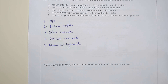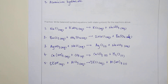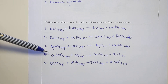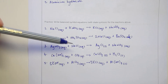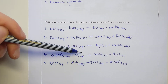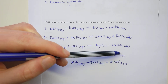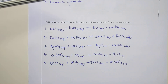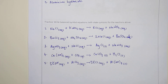One thing worth noting for question four: the precipitate is calcium carbonate, which gets (s). Carbon dioxide is a gas, so give it (g). Be careful with water — while (aq) means dissolved in water, it doesn't make sense to say water is dissolved in water. Water is a liquid in its own right, so it gets (l), not (aq).